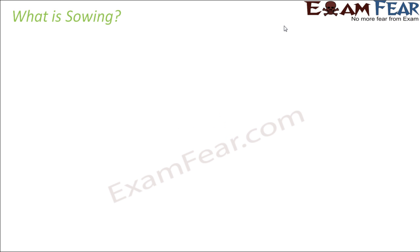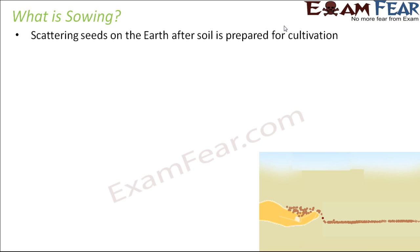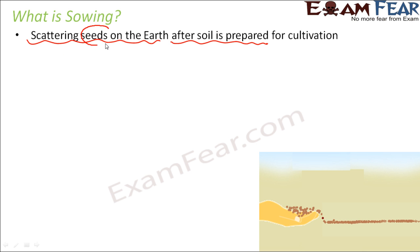So what is sowing? Sowing is the scattering of seeds on the earth after the soil is prepared for cultivation. Once the soil is prepared, seeds need to be scattered, because from these seeds only plants will grow.